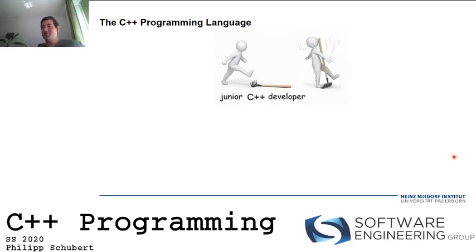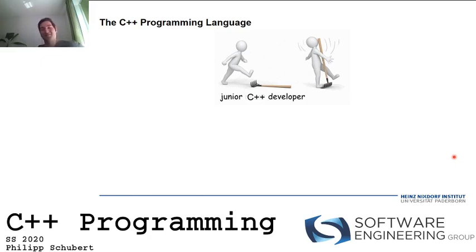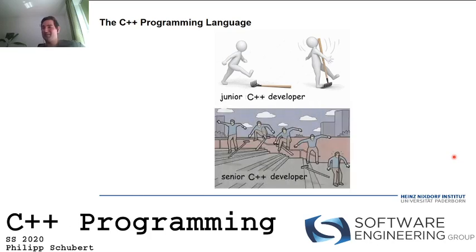The junior C++ developer — which is probably you at the beginning of this course — steps on a fork and the fork immediately jumps right in your face. That's the ordinary case at the beginning. At the end of this course it's more like the senior C++ developer who does cool stuff, but sometimes C++ can still bite you.